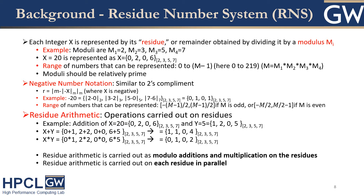To represent a negative number, you use the selected moduli set minus the positive representation. Here is an example for negative 20. In residual arithmetic, the key feature is that the computation of each digit is independent from the others. Operations are carried out on residuals, and this applies for both addition and multiplication. So if we try to add X and Y together, each residue of the addition or multiplication is totally independent. By this, we can increase parallelism and run all digits simultaneously.